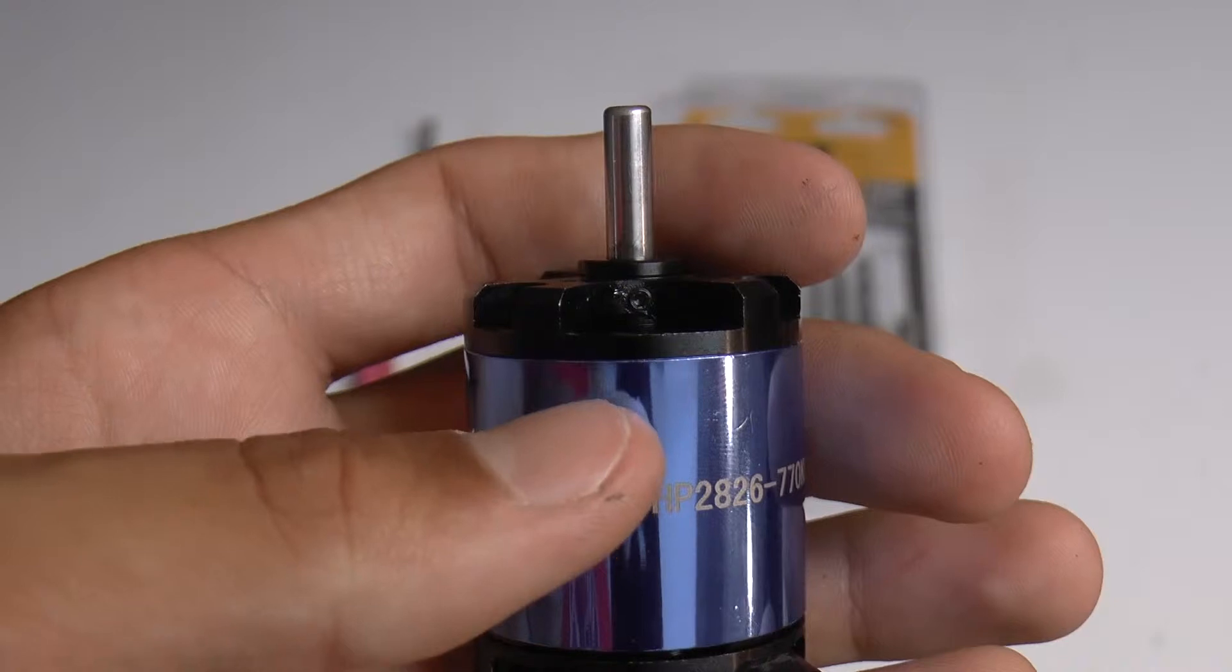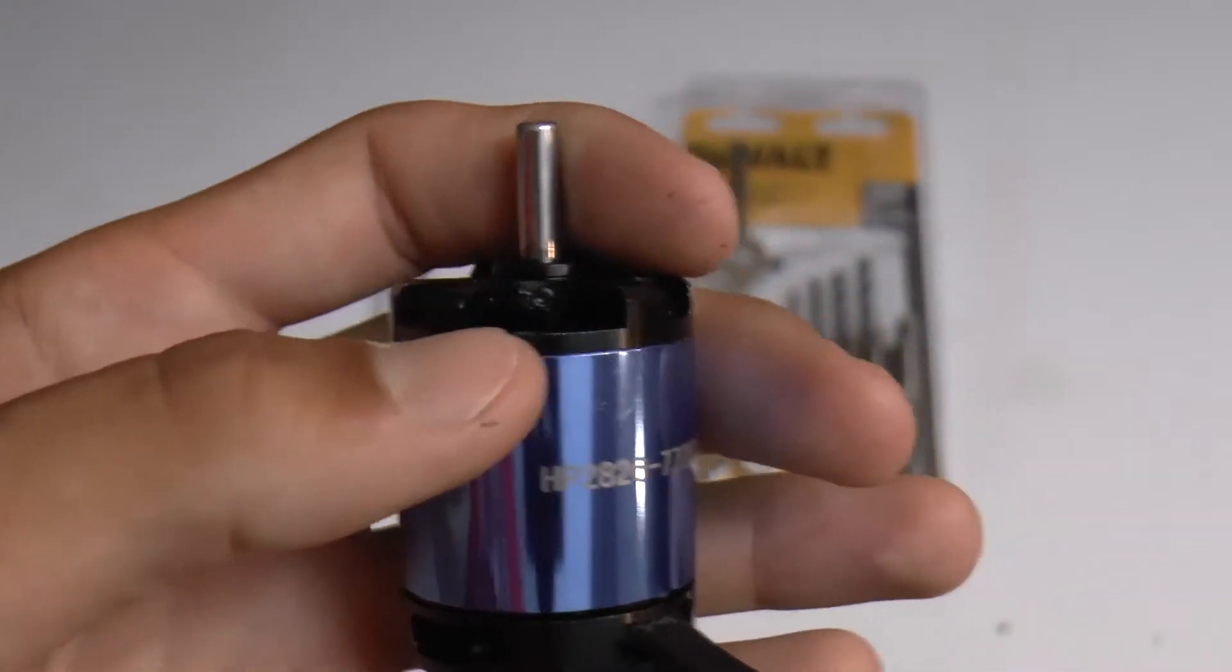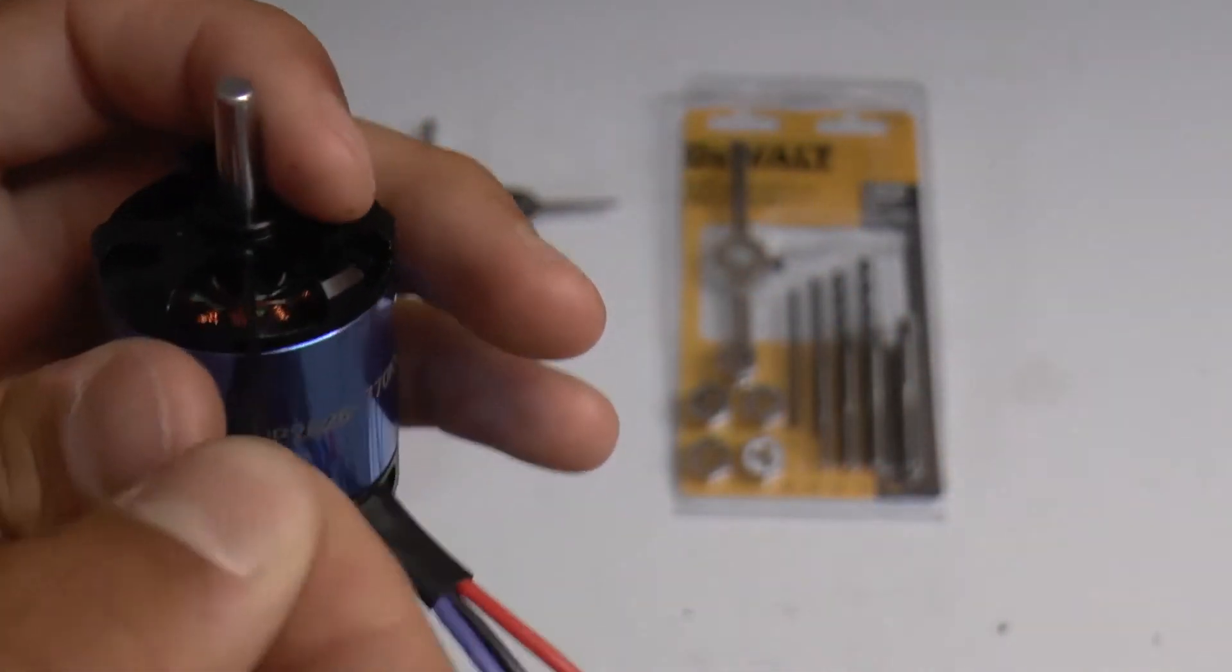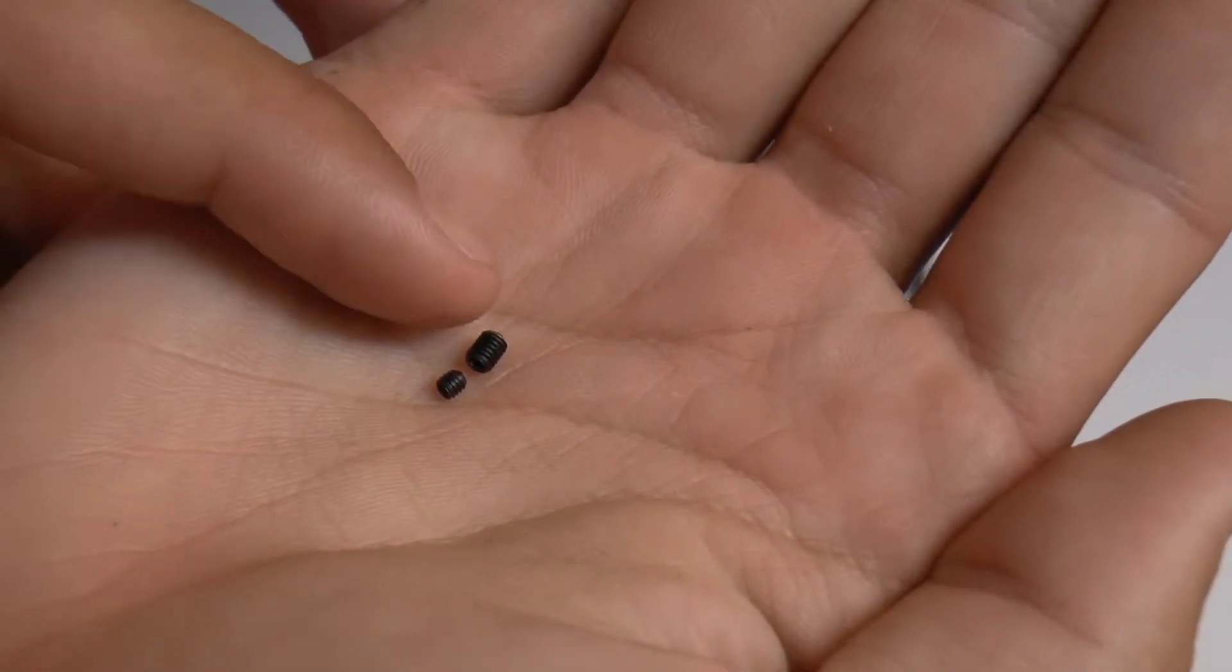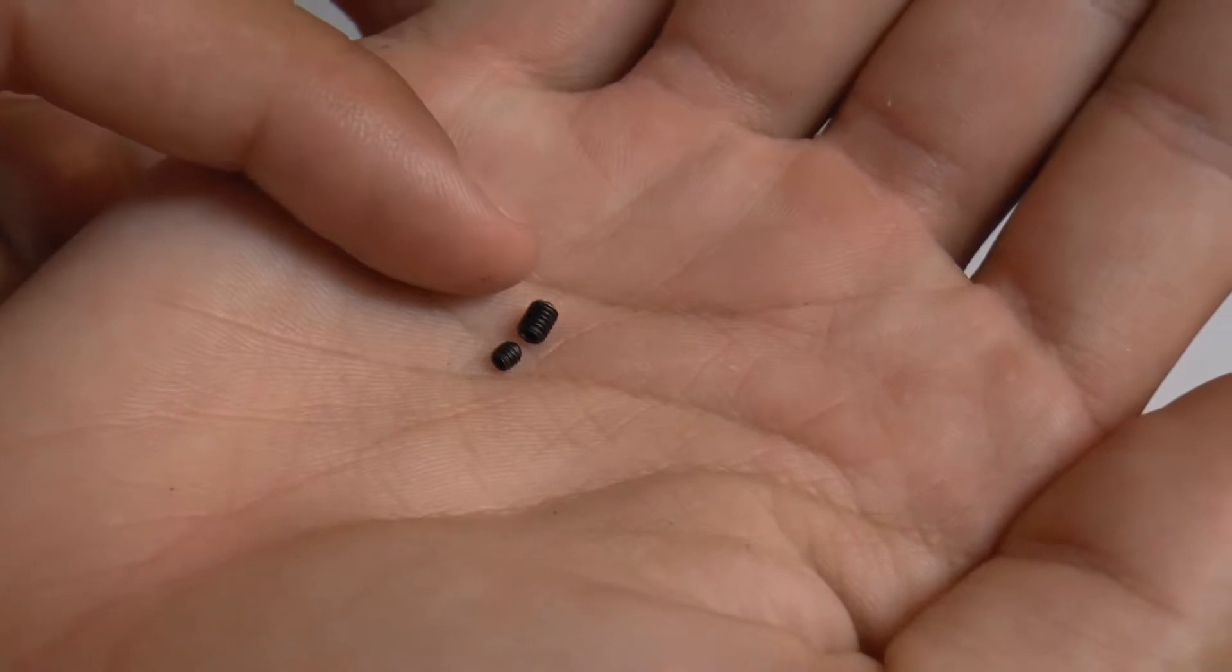So the first thing that we're going to need to do is remove the original small grub screw. Here's a quick size comparison between the old one and the new one that we will be installing.